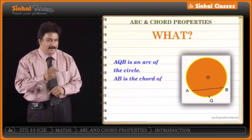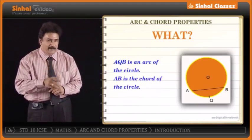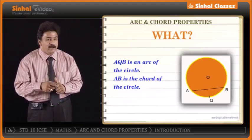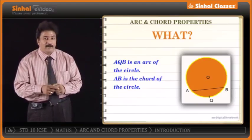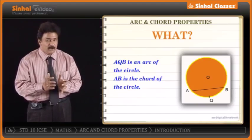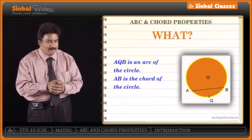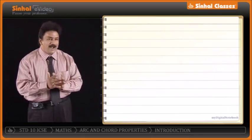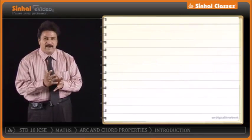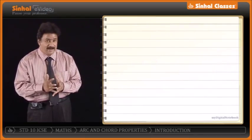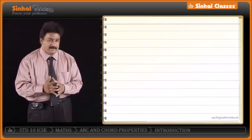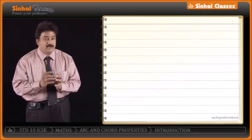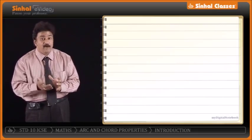If I join points A and B, I get chord AB. So arc is converted into a chord the moment you join points A and B. Now you understand what an arc and a chord are. The combination of arc and chord properties will give rise to some very wonderful properties, concepts, and theorems. In this chapter, we are going to study about that.